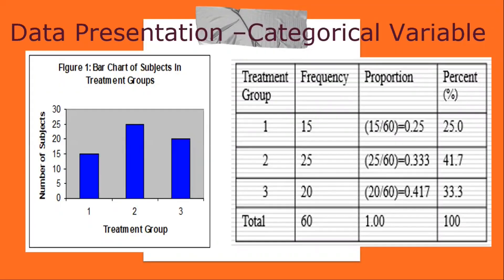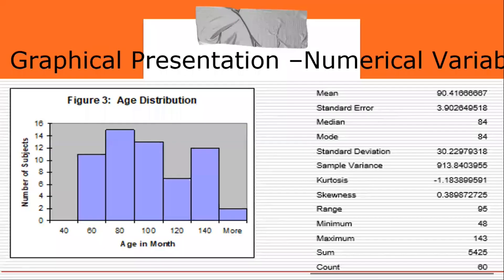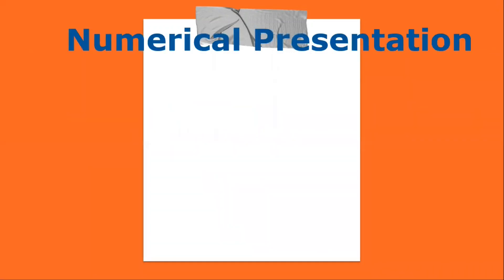For categorical variable data presentation: a bar diagram lists the categories and presents the percent or count of individuals who fall in each category. A pie chart also lists the categories and presents the percent or count of individuals in each category. For a numerical variable histogram, the overall pattern can be described by its shape, center, and spread. For example, an age distribution that is right-skewed, where the center lies between 80 and 100 with no outliers, can also be represented by a box plot showing the five-number summary.